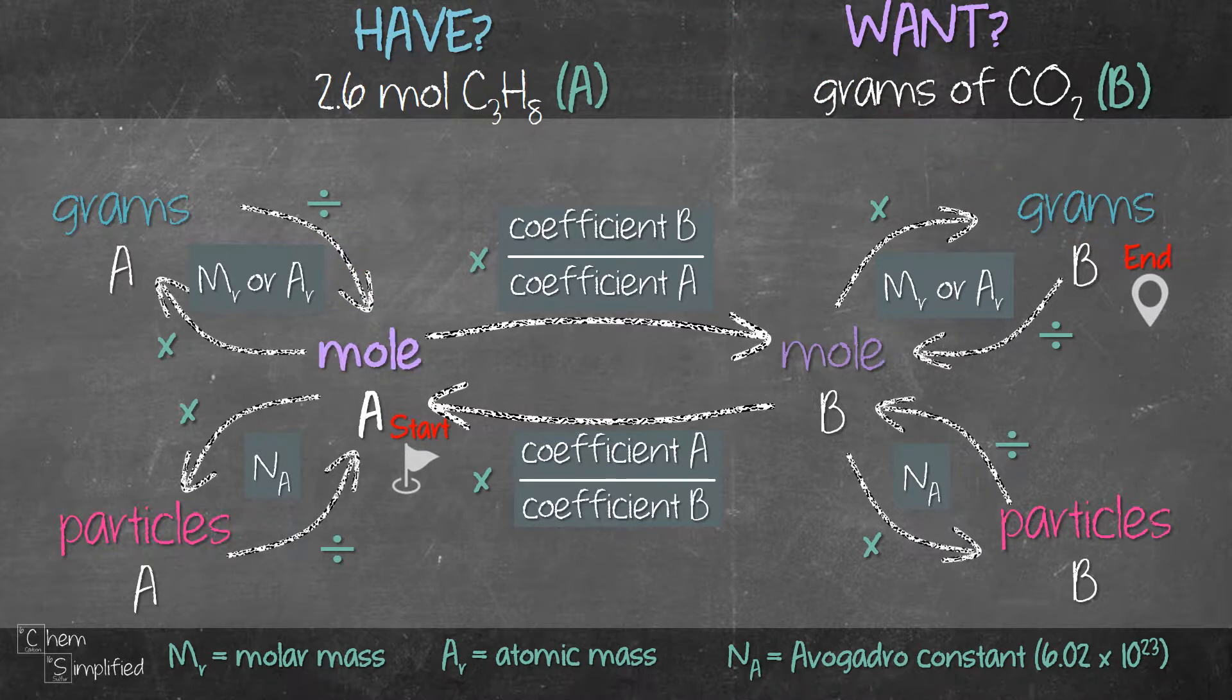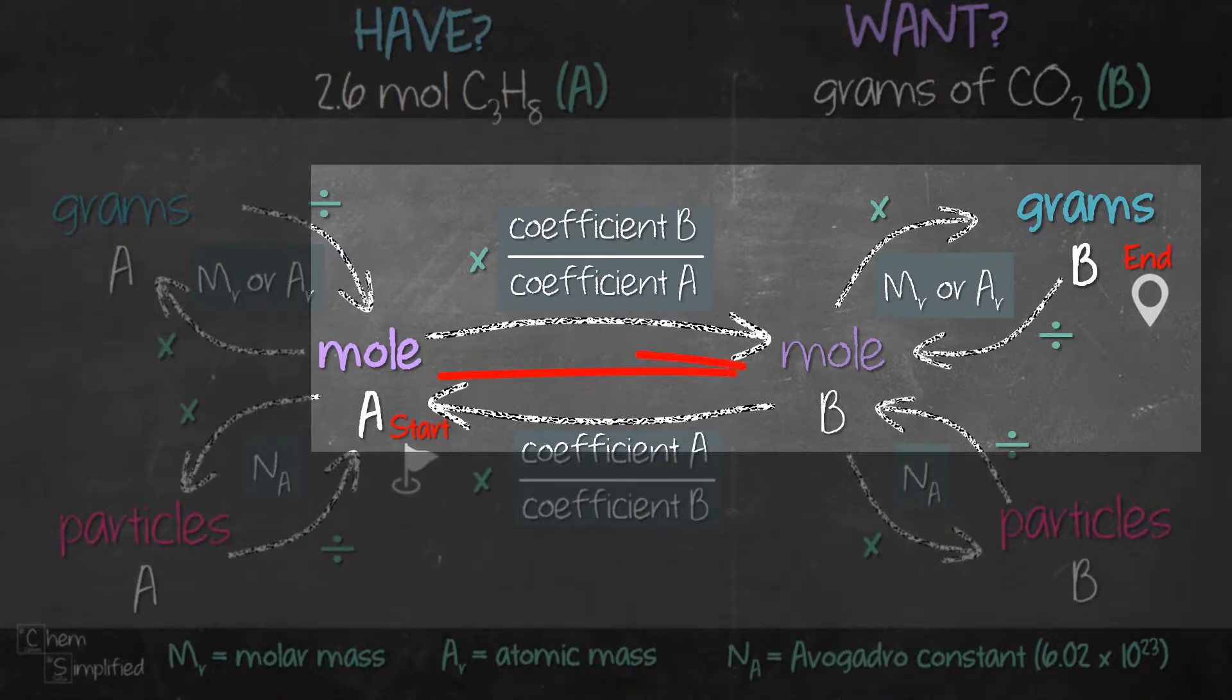Our start point is mole A and our end point is grams B. A is C3H8, B is CO2. So looking at the plan, it will take two steps to go from mole A to grams B.